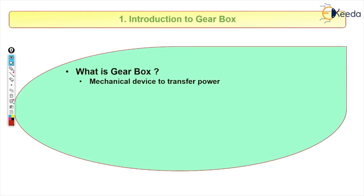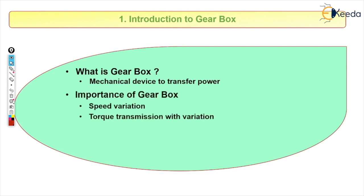First we will see an introduction to the gearbox. A gearbox is a mechanical device used to transfer power, and it has two important features: speed variation and torque variation. We can vary the speed with the help of a gearbox, and similarly we can vary the torque transmission.